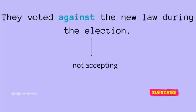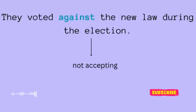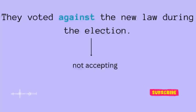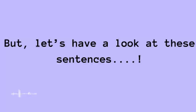'They voted against the new law during the election' — they are not accepting it, so they voted against it to express their opinion. They don't agree with the new law and probably need some changes. So when you don't agree with something, you can say 'I am speaking against this' or perform an action to express your disagreement against something.